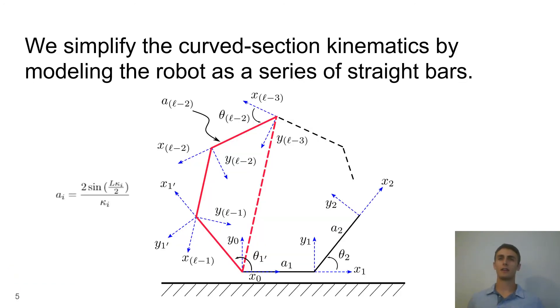We are able to simplify the kinematics of the curved sections of the robot by modeling a straight bar that connects the tips of the curved sections. In order to determine the length of this bar we use the formula shown on the screen.